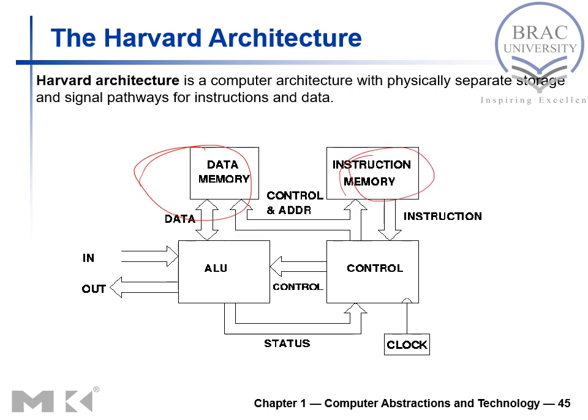The benefit of Harvard architecture is that the bus width can be different for each. For data, we could use a wider bus, and for instruction memory, a narrower bus. In Von Neumann architecture, the bus width is fixed, so data and instructions must use the same bus width. Harvard offers flexibility but is a more complex design.